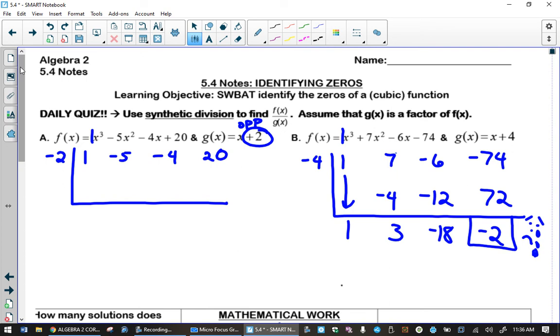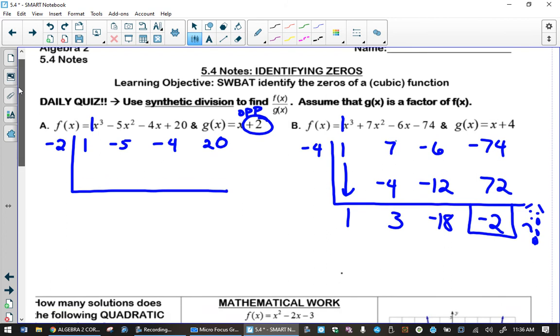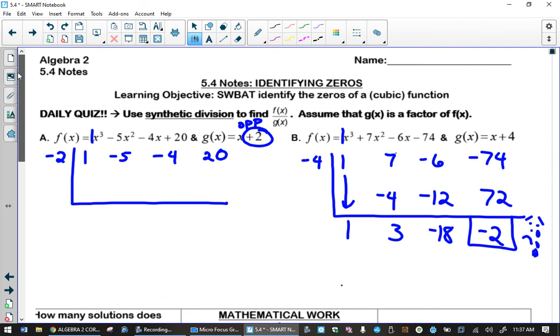So, to get started today, we have a daily quiz, which if you were in the classroom, we would quickly have you do these two problems on your own, with a desk buddy, with your whole pod, and check your answers with each other. But, since we're not together today, I have worked out the synthetic division on problem B already. Go ahead and set up both synthetic divisions for problem A and problem B, and start working on them if you feel confident to do so.